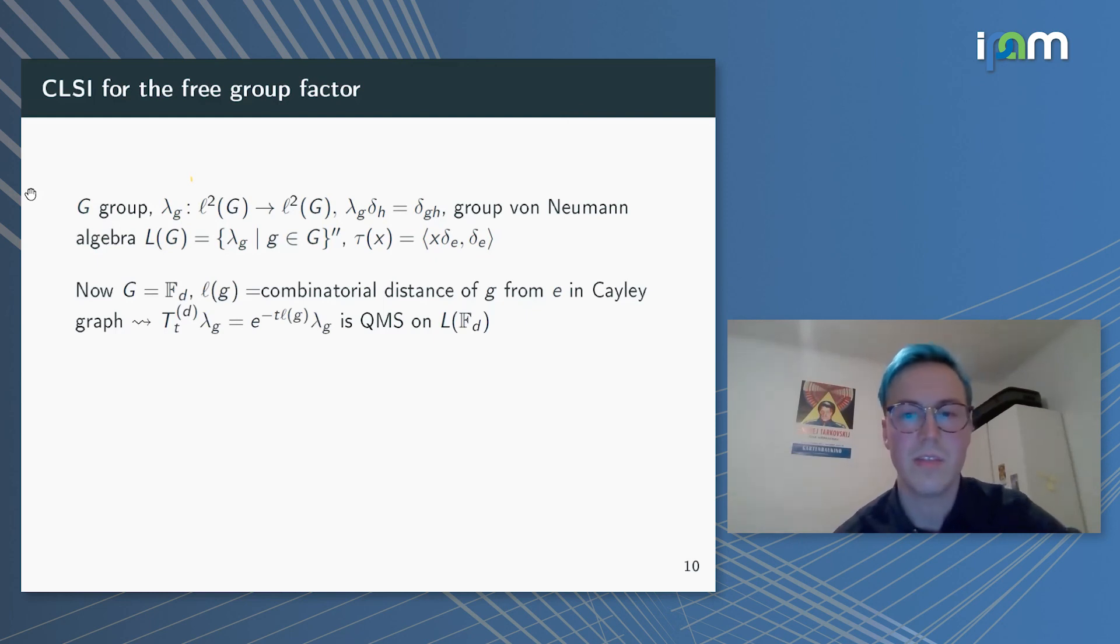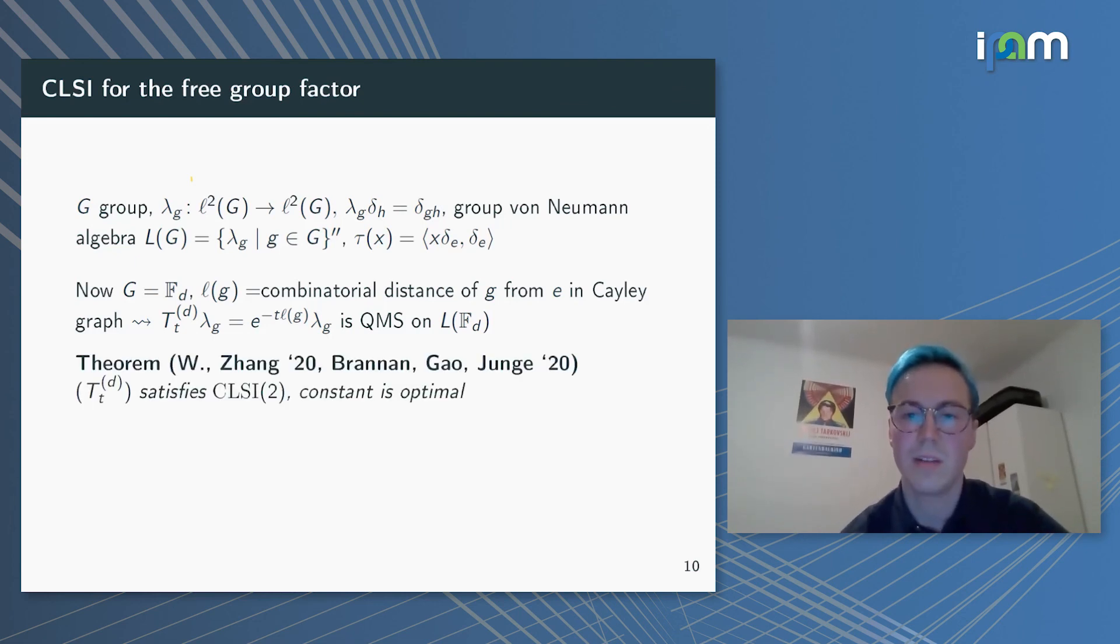If the group is the free group and I use ℓ(g) as the combinatorial distance of an element g from e—in other words, this is just the number of letters of g if I write it as a word in the generators and their inverses—then it's known, due to Haagerup, that e^{−ℓ(g)} multiplication on this λ_g is a QMS. It's actually also τ-symmetric. And Hao Nan and I were able to prove, and it was independently obtained by Brannan, Gao, and Junge, that this QMS satisfies the complete logarithmic Sobolev inequality with constant 2, and this constant is actually optimal.